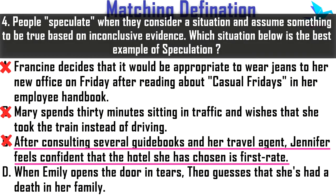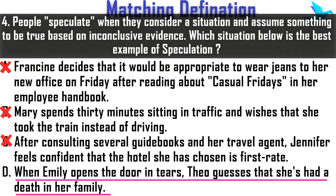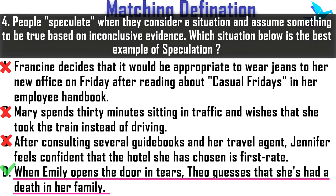Option D: When Emily opens the door in tears, Theo guesses that she had a death in her family. This is the only situation in which someone makes an assumption that is not based on conclusive evidence. So this is something which has been speculated, and the right answer is option D.